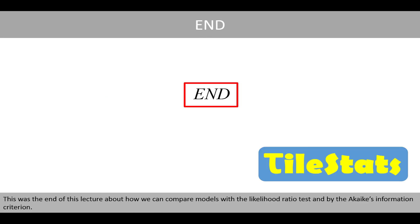This was the end of this lecture about how we can compare models with the likelihood ratio test and by the Akaike information criterion.